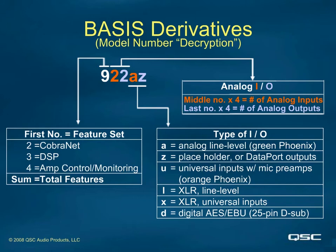Please note the font used for this presentation. In the IO block, that is an uppercase I, while in the fourth line of that block is a lowercase L for XLR line-level connections — neither of which is the number one. Note also that the letter Z is unique in that it can merely be a placeholder to keep the model at five characters, or it can mean data port outputs, if the device indeed has data ports.